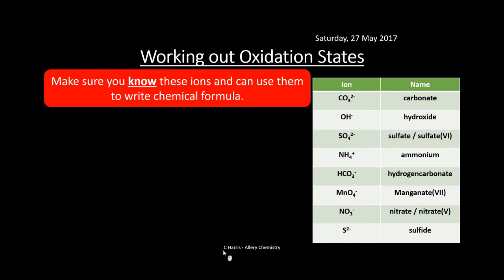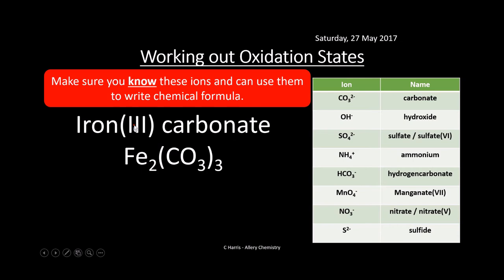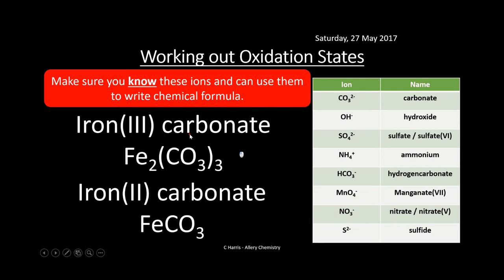Make sure you know these common ions and can write their chemical formulae: carbonate, hydroxide, sulfate SO₄²⁻, ammonium NH₄⁺, hydrogen carbonate HCO₃⁻, manganate(VII) MnO₄⁻, nitrate NO₃⁻ (also called nitrate(V)), and sulfide S²⁻. For systematic names using Roman numerals — for example, iron(III) carbonate is Fe₂(CO₃)₃, because Fe is +3 and carbonate is −2, needing two irons and three carbonates to balance. Iron(II) carbonate is simply FeCO₃.